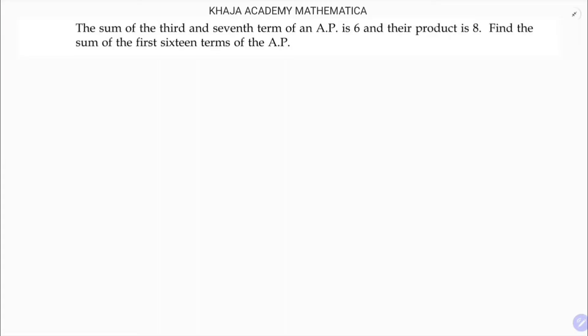The sum of the third and seventh term of an AP is 6 and their product is 8. The given condition is: third term plus seventh term equals 6, and third term into seventh term equals 8. We need to find the sum of the first 16 terms.